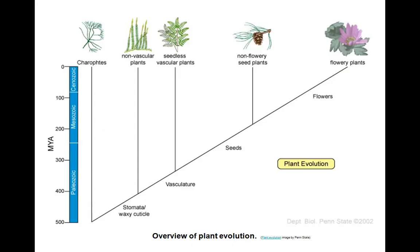As shown in this diagram, charophytes are the closest living relatives of land plants. Approximately 475 million years ago, stomata and cuticle evolved, giving rise to non-vascular plants. Vascular plants occurred some 425 million years ago. Vascular plants with seeds that protected the embryos evolved around 360 million years ago — the first being the gymnosperms, then later the angiosperms, the flowering plants, which are the most successful land plants.